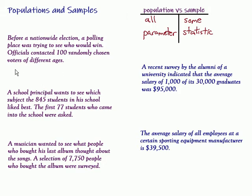Okay, so the population is going to be all of the voters because that's what we're dealing with, the nationwide election, and everybody that is going to vote. And then they contacted 100 randomly chosen voters. It's a good idea that it was random, that makes for a good sample, and that is the 100 that were chosen, that is our sample.